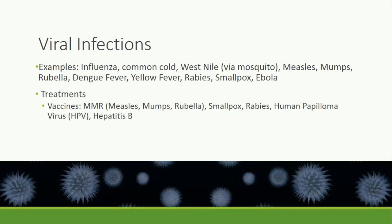Viral infections are fairly common — we've all had the common cold at least once. Other viral infections include influenza strains, West Nile infections from mosquito bites, measles, mumps, rubella, dengue fever, yellow fever, rabies, smallpox, and Ebola. The only treatment for viral infections is vaccines. While vaccines for viral infections aren't rare, they are not available for all viruses. For example, there is no vaccine for dengue fever or rabies in late stages.